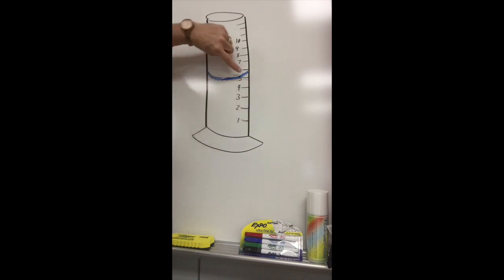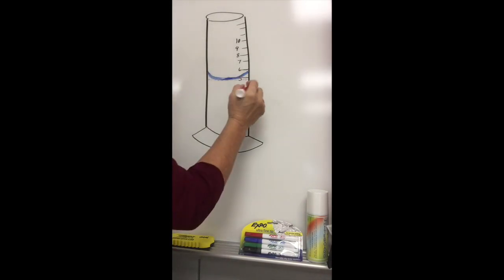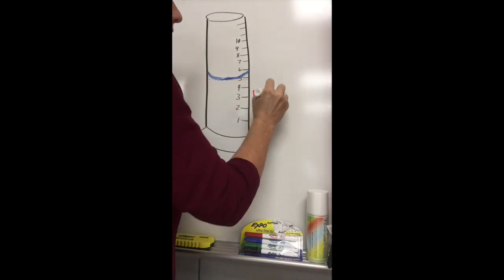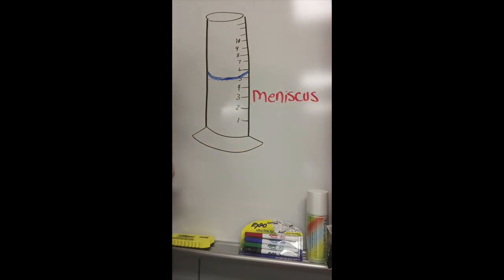So this wouldn't actually be up here close to six. It's actually a little bit below the five. So this would be like 4.75. So if you'll read the bottom of this, that's the meniscus. And that's spelled M-E-N-I-S-C-U-S. Meniscus. So hopefully that will help in reading the bottom.